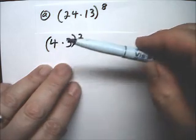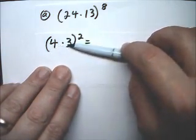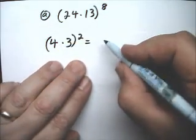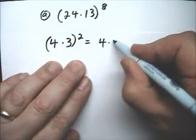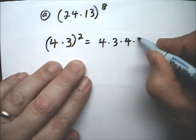Remember, as you probably realized from before, this exponent of 2 means I have two of these. So that's 4 times 3, that's one of them, and the other one is another 4 times 3.